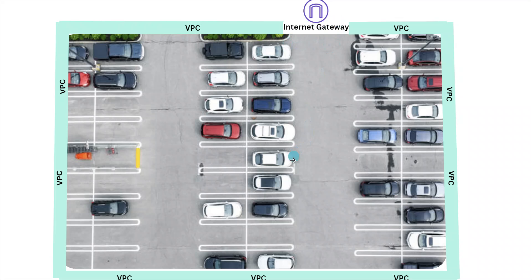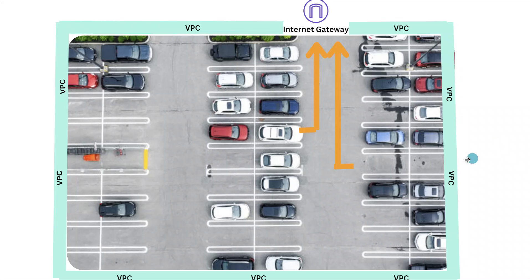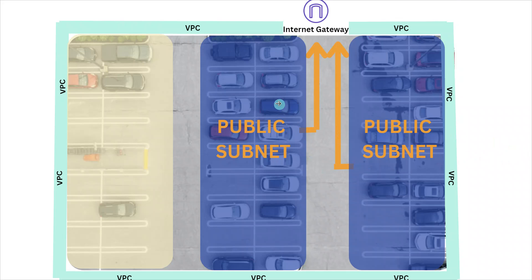Now inside your VPC, if you observe, there are three logically isolated sections. These isolated sections are called subnets. Only two of these sections have a route to go in and out of the VPC through the internet gateway — these two sections will be called public subnets.